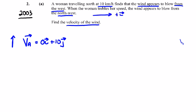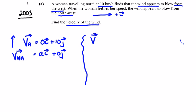We don't know the speed so we'll call it a in the i direction plus zero in the j direction — that's what the wind appears to be to the person, the velocity of the wind relative to the person. When she travels at triple her speed, the velocity of the woman is zero i plus 30 j.